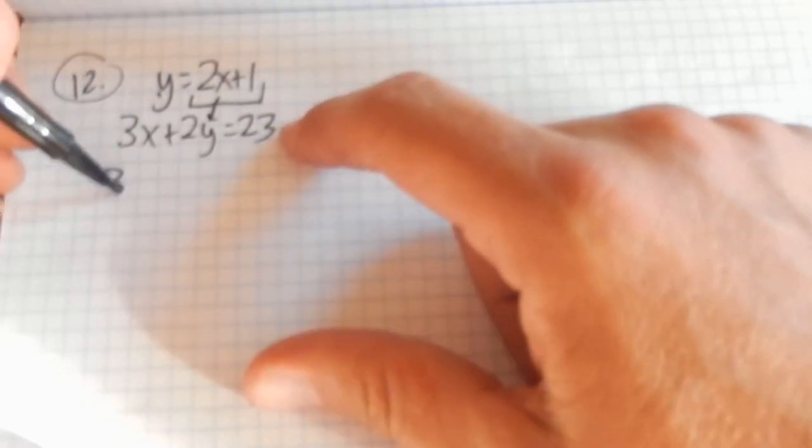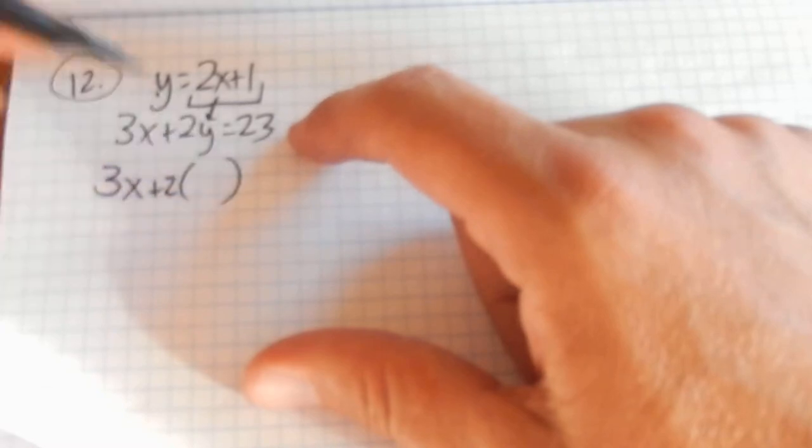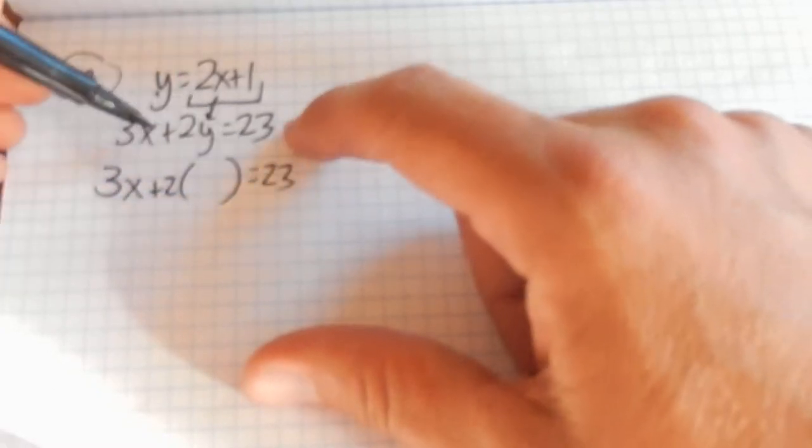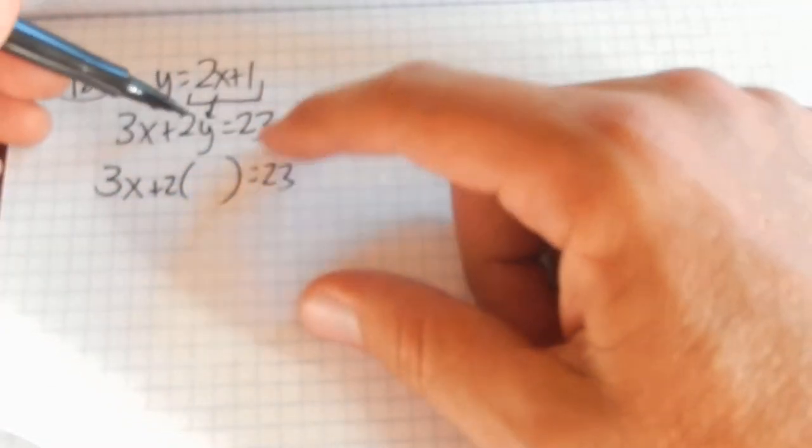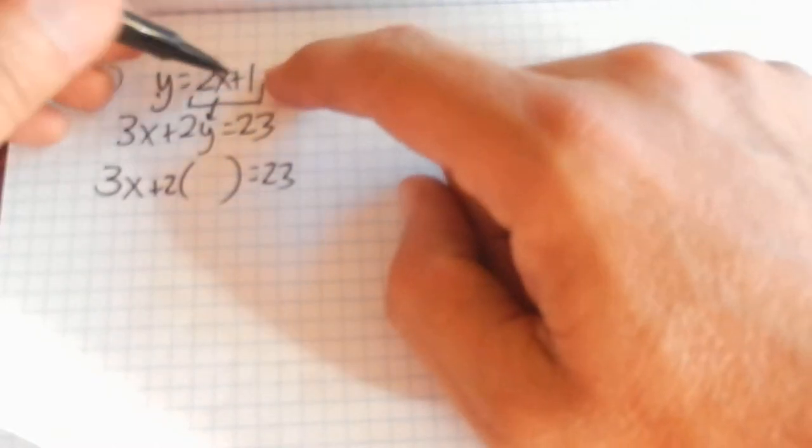So this equation, the second one, says 3 times x plus 2 times y equals 23. But I know what y is, at least in terms of x. It's 2x plus 1.